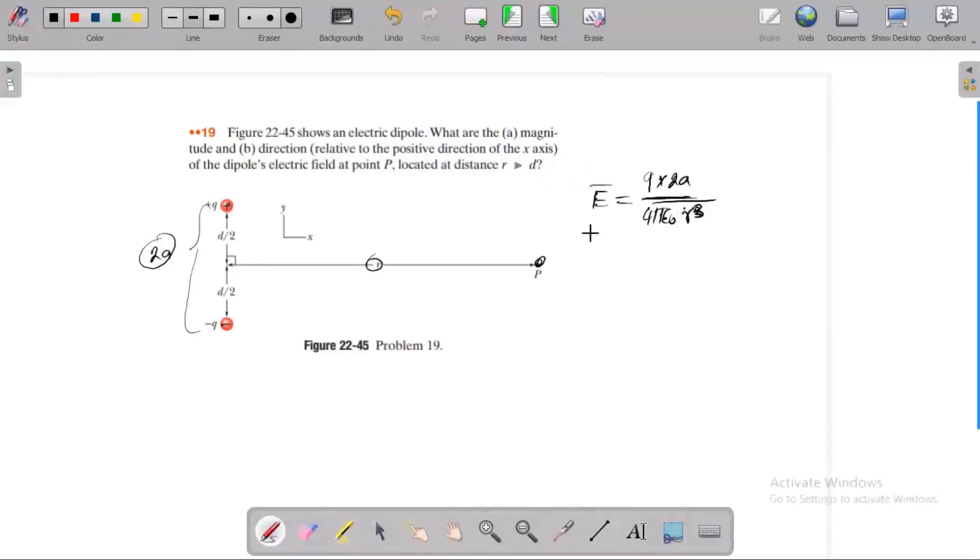So the dipole electric field is varying with R cube. Here electric field is inversely proportional to R cube.